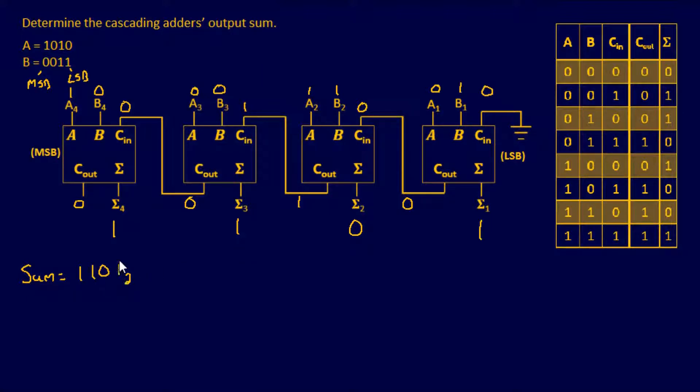This is going to be obviously base 2. You can either use your calculator or do it the old-fashioned way. So 1, 1, 0, 1 equals in decimal format equals 13. And that's a base 10 as well.